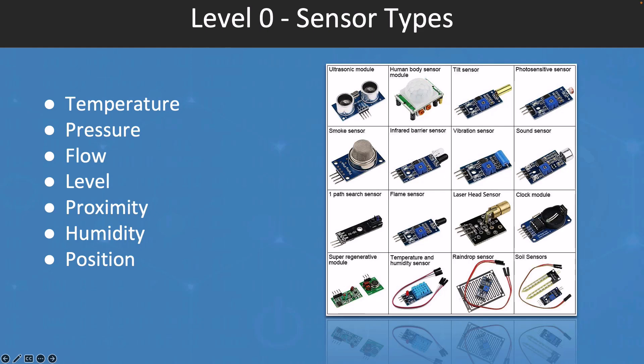We also have the level sensors, which are used to measure the level of a fluid or material within a container or tank. They can use ultrasonic, capacitive, or radar sensors. We also have the proximity sensors, which are used to detect the presence of an object or material in close proximity to the sensor. Humidity sensors are used to measure the level of humidity or moisture in the air or within a system. Meanwhile, position sensors are used to measure the position of an object within a system.